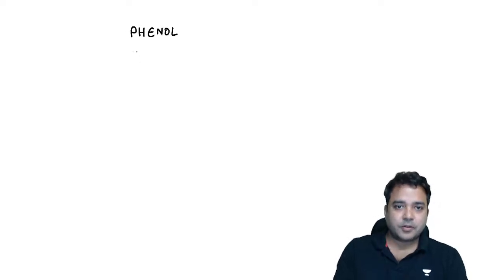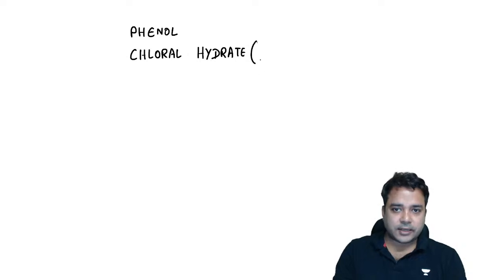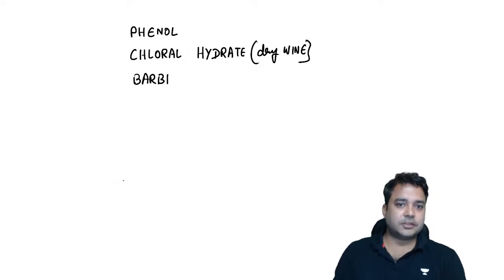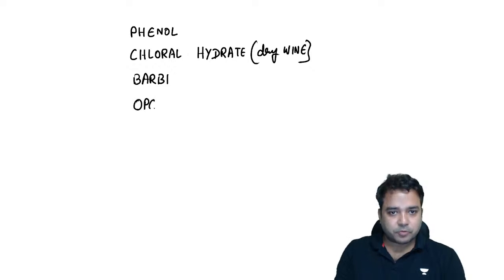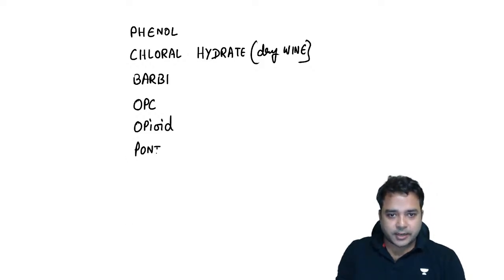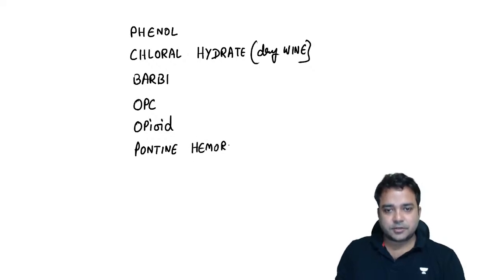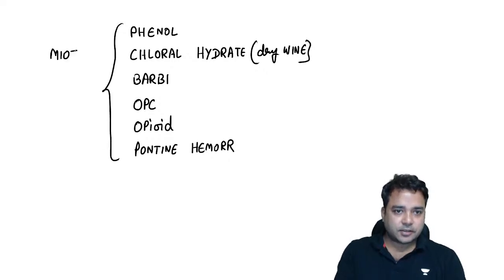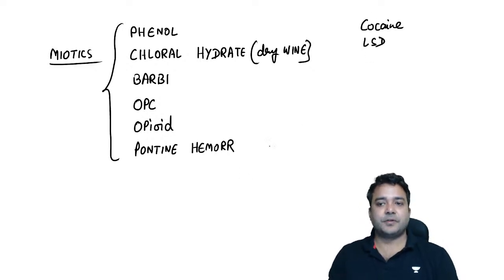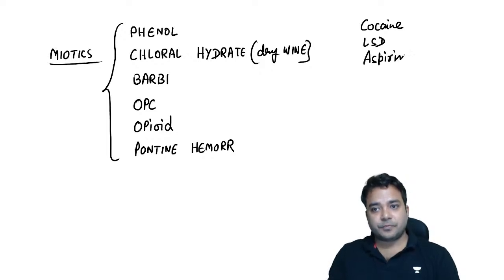Important miotic compounds: phenol, chloral hydrate (commonly called Mickey Finn/dry wine), barbiturate group, OPC compounds, opioid compounds, and cases of pontine hemorrhage — all these lead to miosis. Poisons like cocaine, LSD, and aspirin lead to mydriasis, i.e., dilated pupils. At least remember these three agents that cause mydriasis.